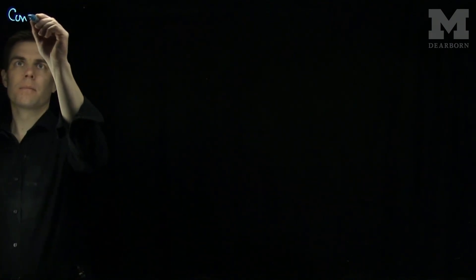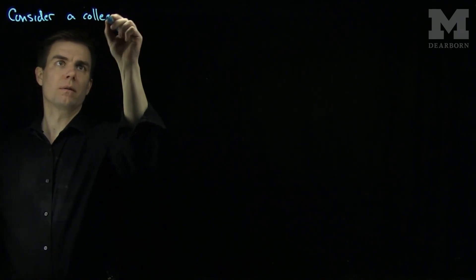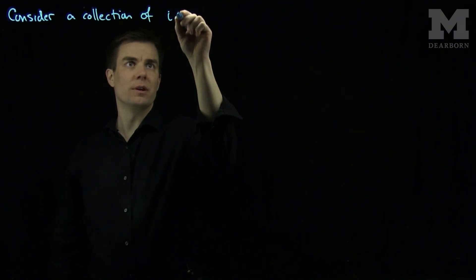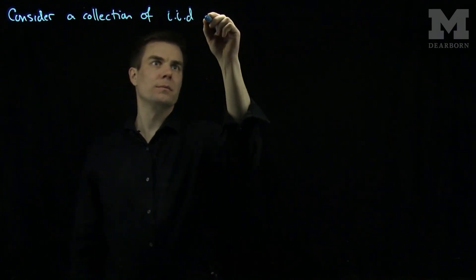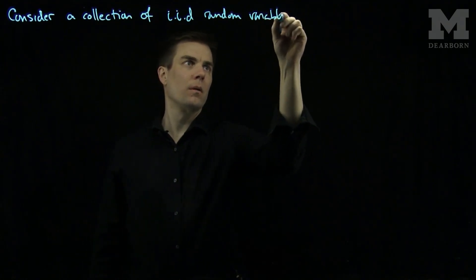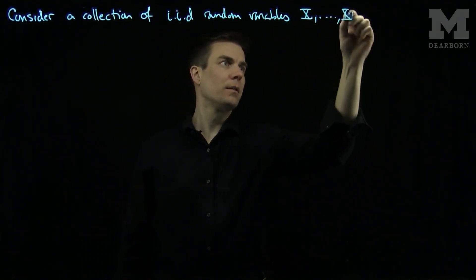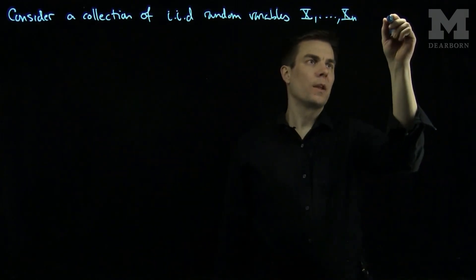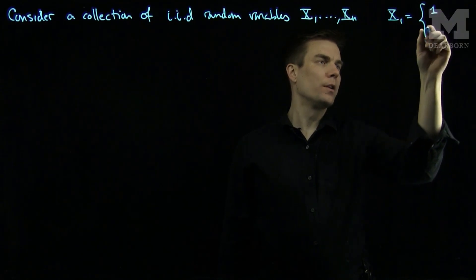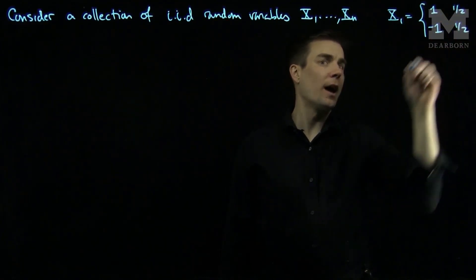Let's consider a collection of identically distributed independent random variables, x1 through xn, where x1 is either 1 or negative 1 with probability 1 half.